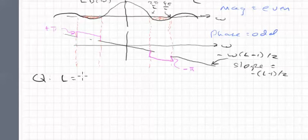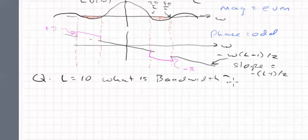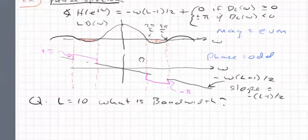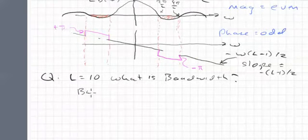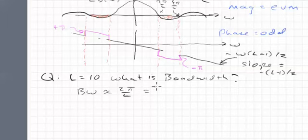Supposing that L is equal to 10, what is the bandwidth? And the answer has to do with this zero crossing. This approximate bandwidth is, since this is a function of omega, is this first zero crossing, 2 pi over L. So bandwidth is approximately 2 pi over L, which is 2 pi over 10, which is pi over 5 radians per sample.